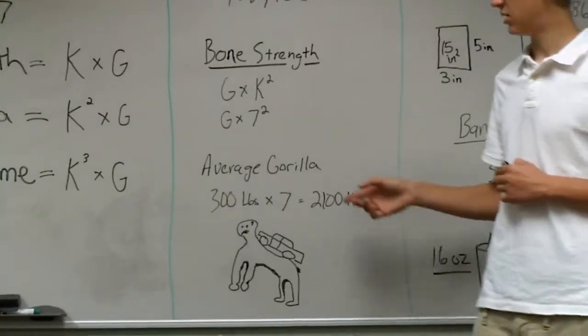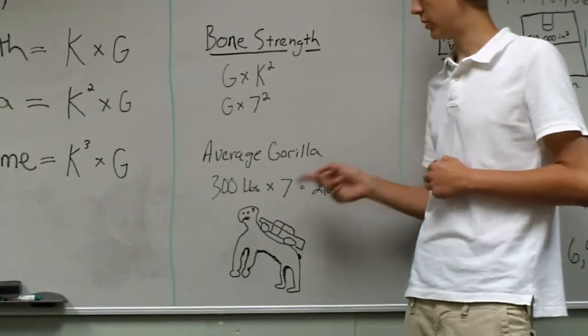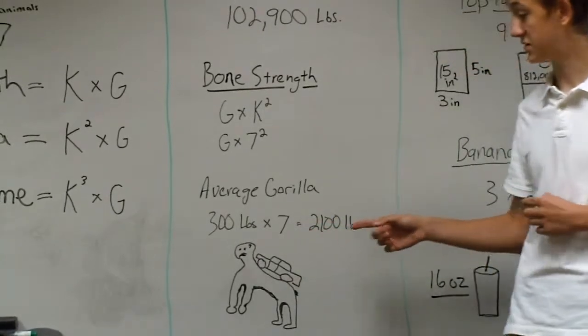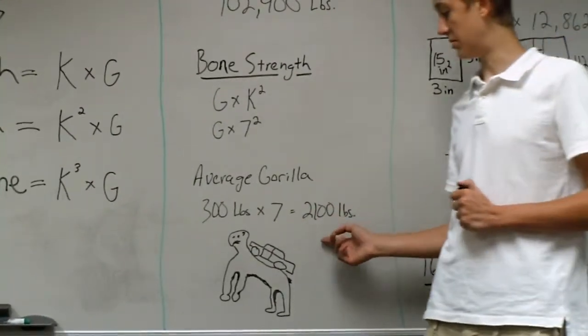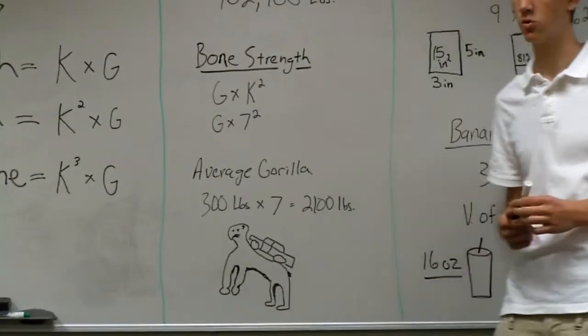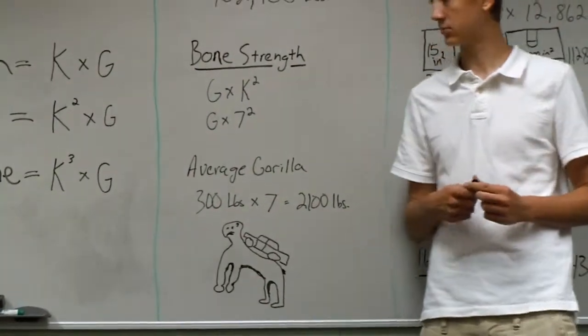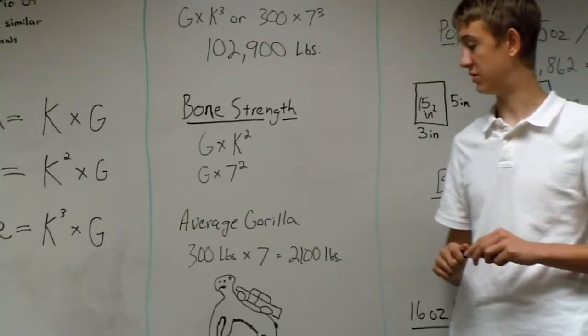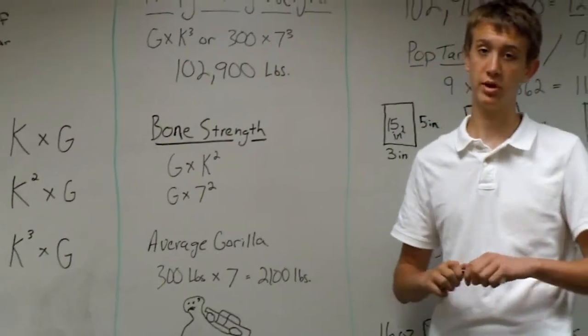But then in perspective, that would be like an average gorilla weighing 300 pounds carrying something seven times that, which is about 2,100 pounds or an average car. That would make it difficult for him to even get up, let alone climb up the Empire State Building.